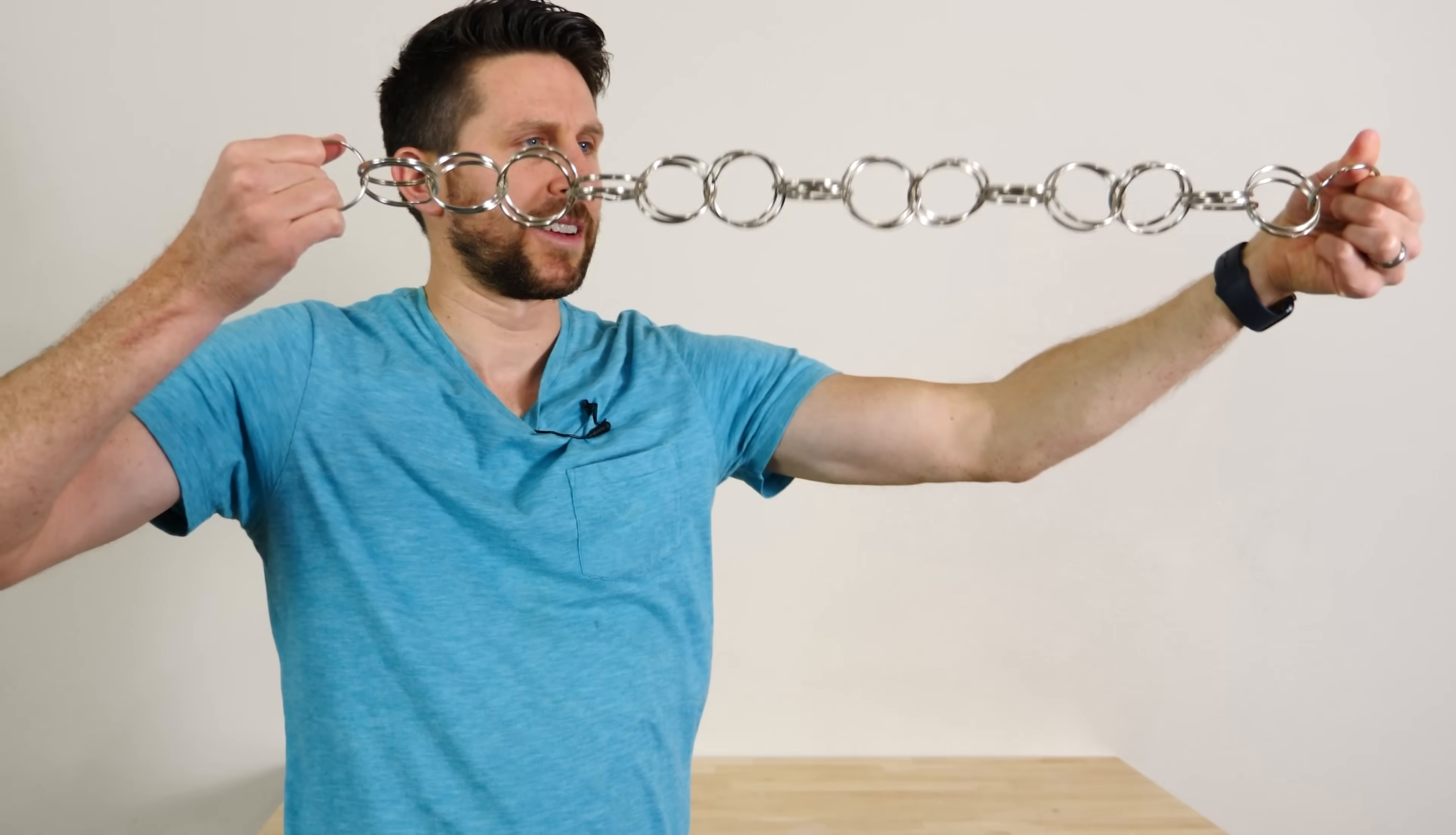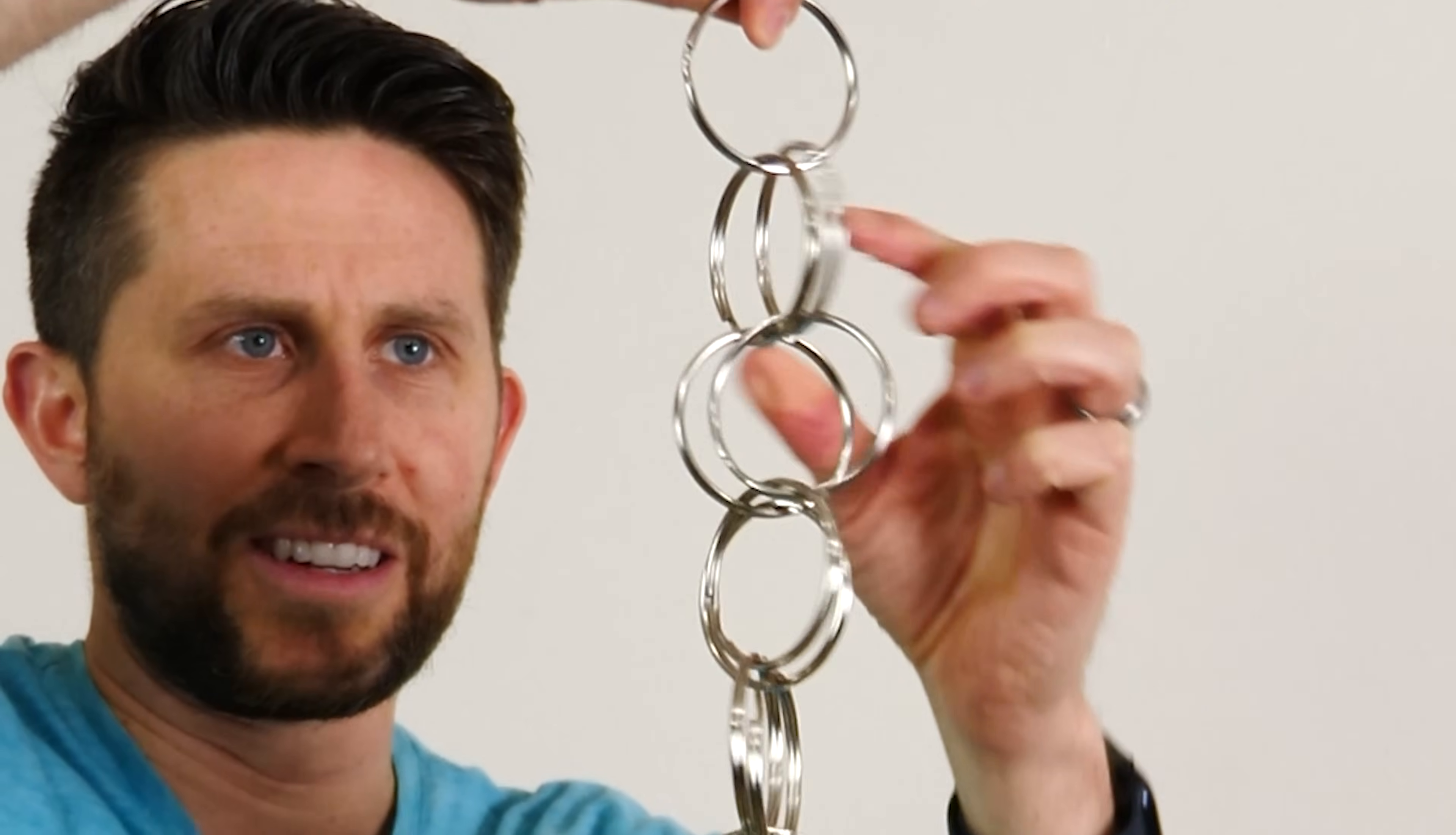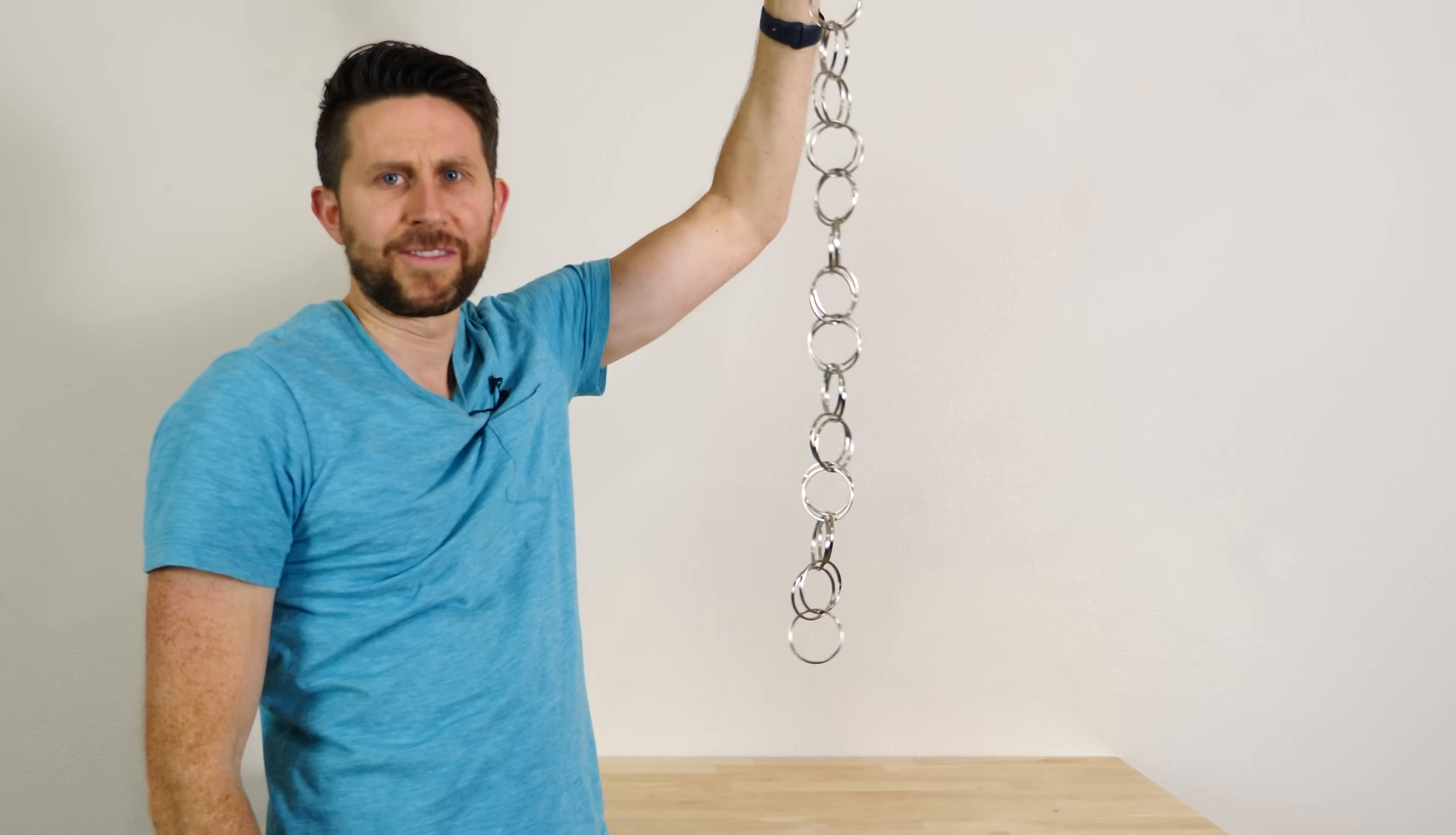So you can see I have a bunch of rings looped together here. You can see this top ring is looped together very securely on these top two rings. But watch what happens when I let it go. It actually falls to the very bottom.